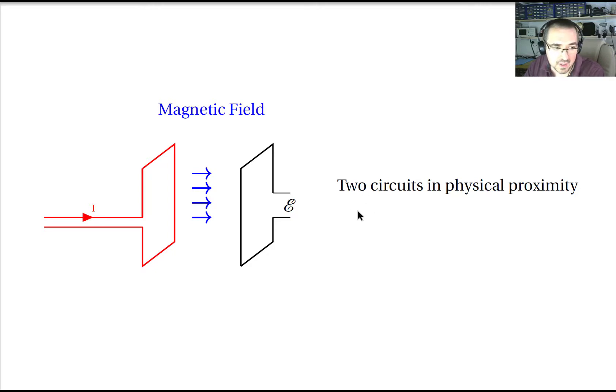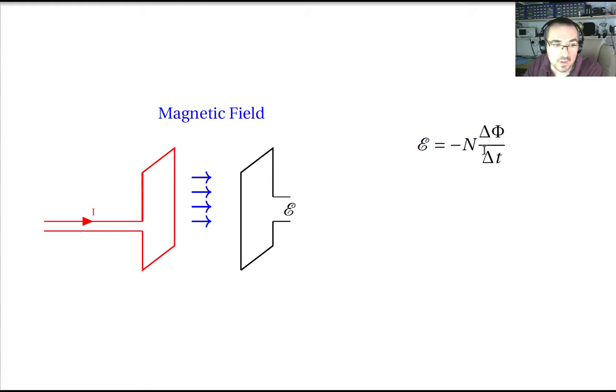So here I've used the symbol for electromotive force but that's the same as voltage. Now Faraday's law tells us that the magnitude of this voltage will be proportionate to the rate of change of the total magnetic flux phi with respect to time, and phi is the total magnetic flux linking circuit two from circuit one.